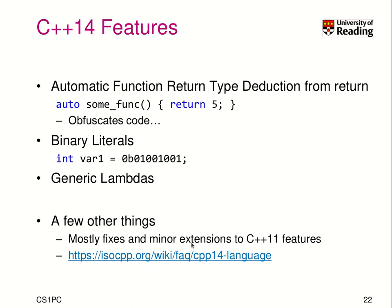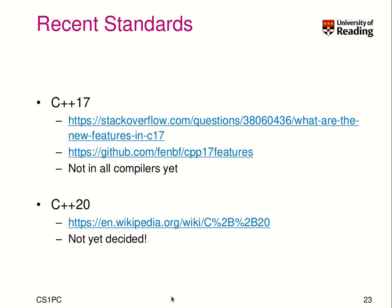There were mostly fixes and minor extensions to C++11 features, and you can find more details at isocpp.org — ISO is the standard body and CPP stands for C++. Recent standards include C++17, where you can find more information on Stack Overflow. The features are minor and not yet supported in all compilers, which is why they are not covered in detail here.